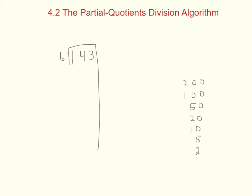Before we start dividing, I have a chart over here. Using this chart can help us find some partial quotients — some multiples that will help us. We start by looking at the divisor; in this case the divisor is 6.